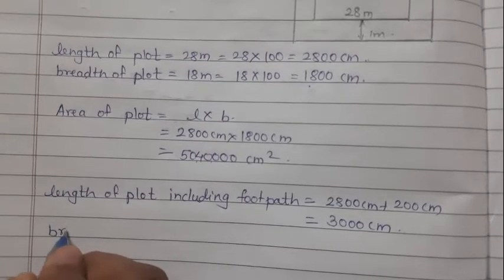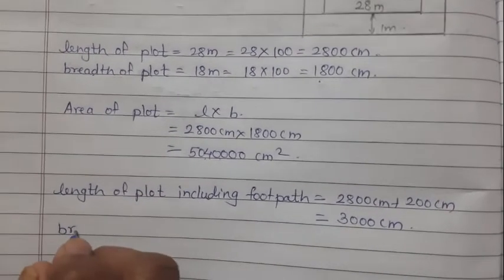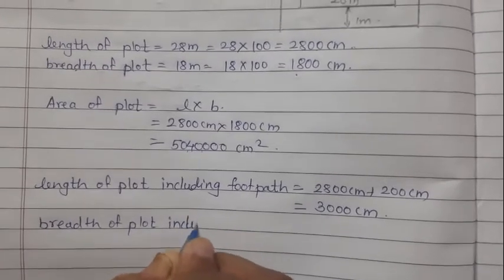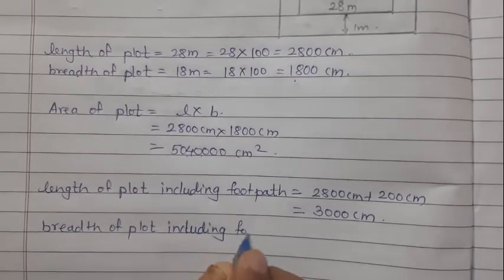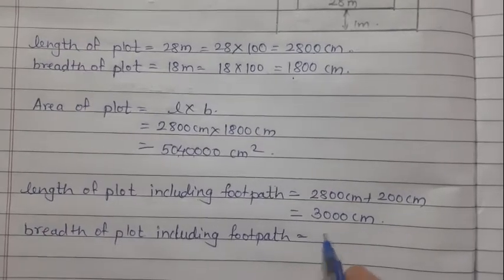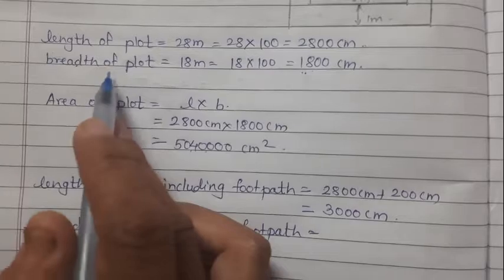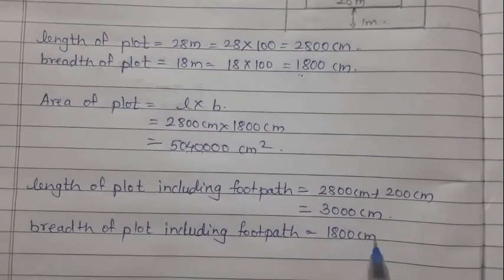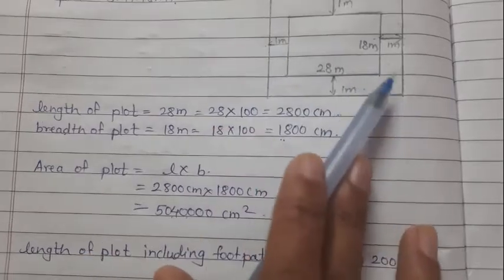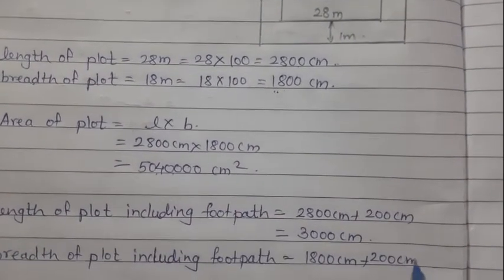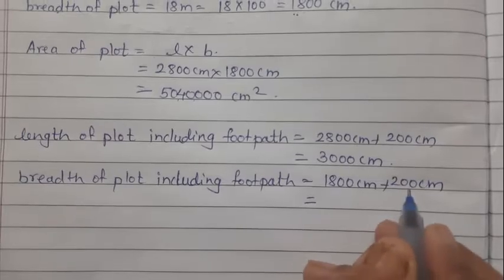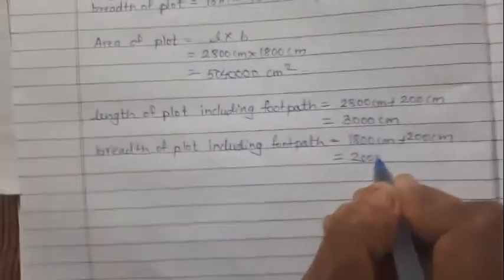Breadth of plot including footpath: breadth is 1800 cm, plus from both sides 1 meter and 1 meter, which is 200 cm. So 1800 plus 200 equals 2000 cm.